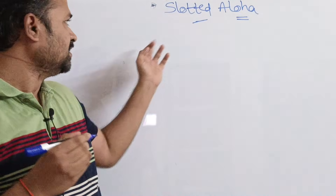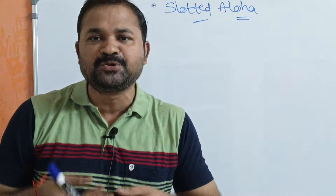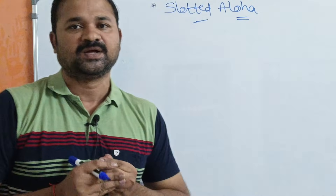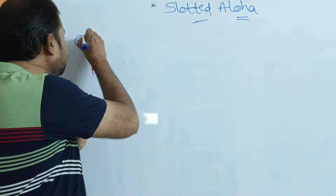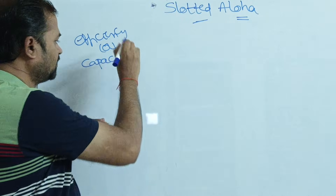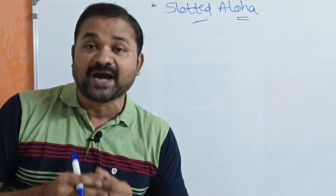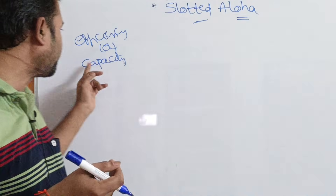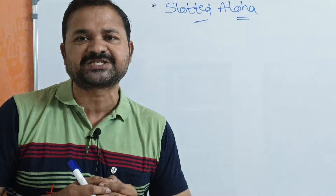Let us discuss slotted ALOHA. We know there are two types of ALOHA: pure ALOHA and slotted ALOHA. We have already seen pure ALOHA in the last video. Slotted ALOHA is mainly useful to improve the efficiency or capacity of pure ALOHA. We can overcome the disadvantage of pure ALOHA with the help of slotted ALOHA, so slotted ALOHA is an enhanced version of pure ALOHA.